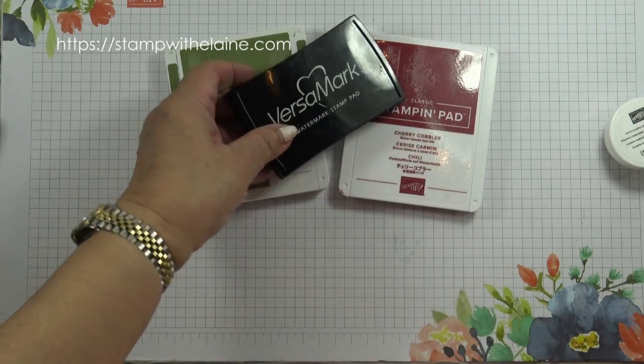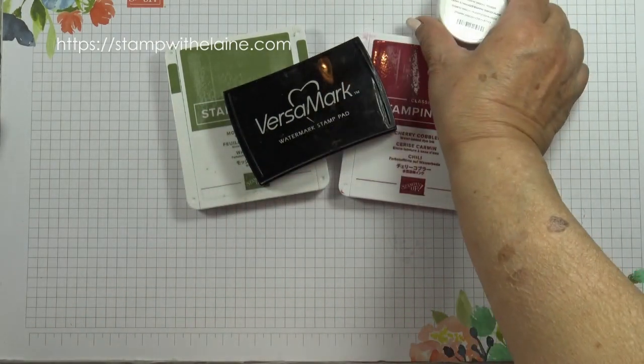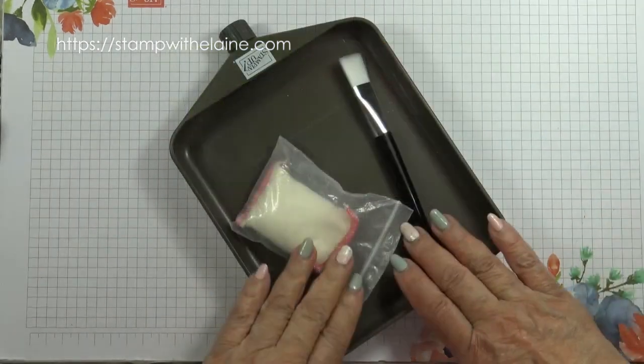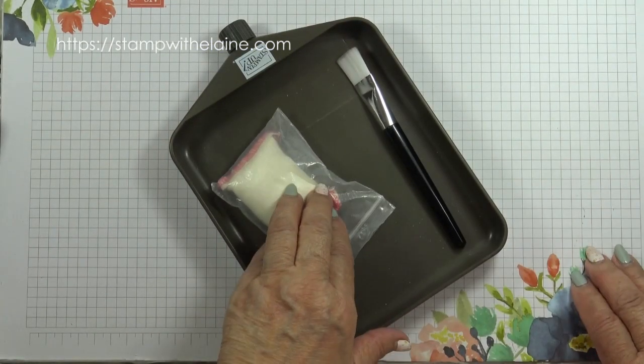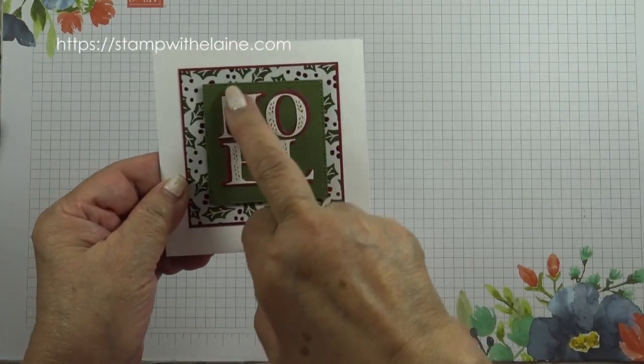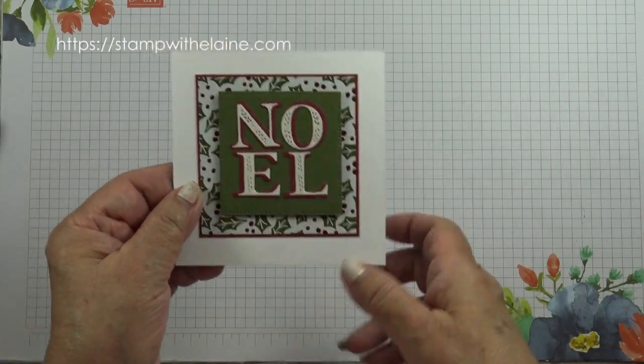And in addition to that for the square card, we need Versamark and white embossing powder from the basics embossing powder pack, and also the embossing additions toolkit for the square card in order to emboss and heat set the noel.